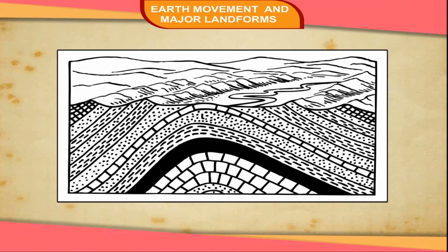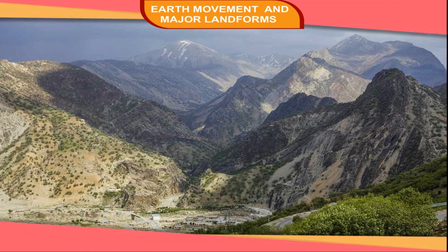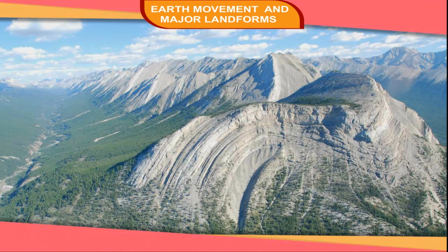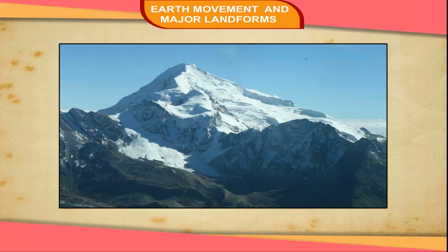Forces of Compression act on the rock strata from opposite directions, causing the rock layers to be bent up or folded into a series of anticlines and synclines. These forces are responsible for the formation of folded mountains. The Himalayas, the Andes, the Alps, and the Rockies have been formed due to the forces of compression and are examples of folded mountains.